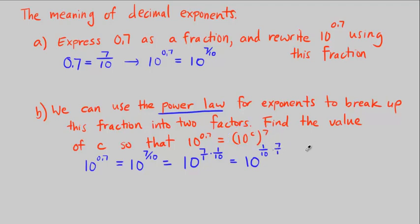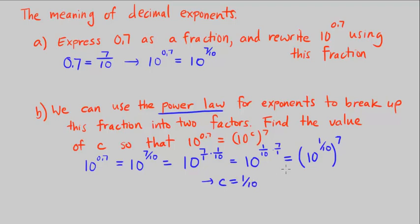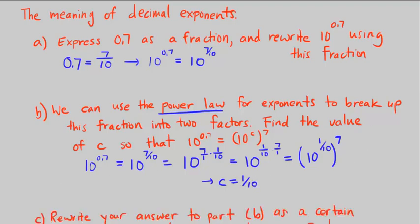That's the same thing as putting this in parentheses and saying 10 to the power of 1 over 10, to the power of 7 over 1, or just 7, because 7 over 1 is 7. So what is C here? C is equal to 1 over 10.